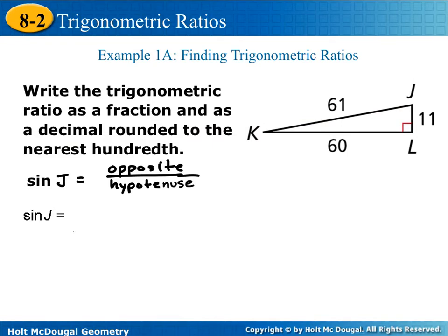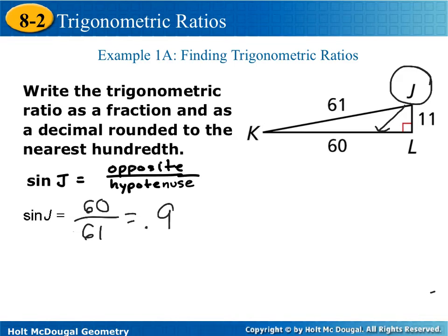In our first example, it says write the trigonometric ratio as a fraction and as a decimal rounded to the nearest hundredth. So we have the sine of J. Sine, we know, is opposite over hypotenuse. So we're looking at the opposite over the hypotenuse of angle J. What side is opposite of angle J? Side K, which is 60. And what's our hypotenuse? 61. So we would do 60 over 61 in our calculator — 0.98. When it says to the nearest hundredth, remember that means it's going to be two decimal places.